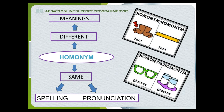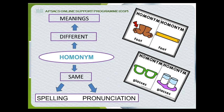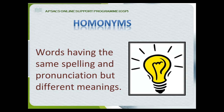For example, foot and foot. Can you notice the spellings? Both the spellings are the same and the way I am pronouncing the word is also the same. But the pictures show you the two different meanings of foot. Similarly, glasses — the spellings are the same, the way we pronounce it is absolutely the same, but the two pictures are showing you two different meanings of the word. So now we know that homonyms are words having the same spelling and pronunciations but different meanings.